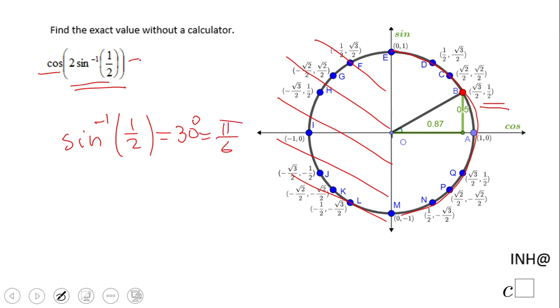So we have here cosine of two times pi over six. Okay, and let me move down here. And that will be cosine of pi over three, right? Two goes into six three times.